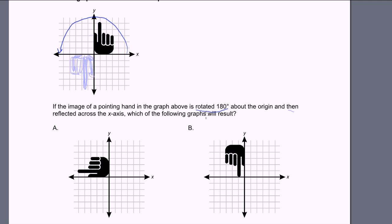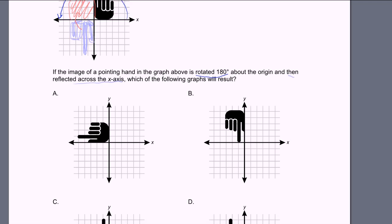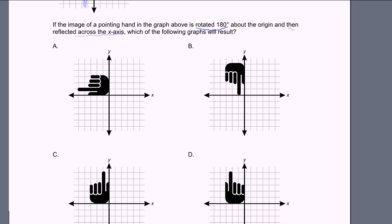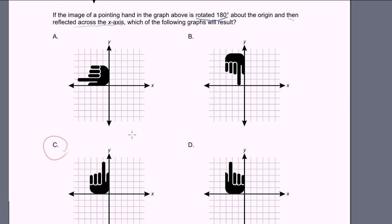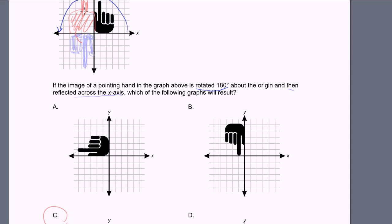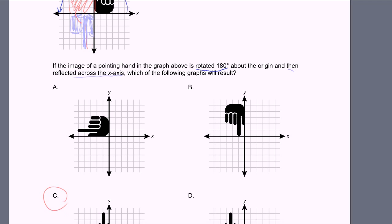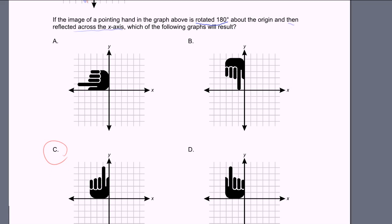The second part is then reflected across the x-axis. So if we reflect this across the x-axis, it's going to look like this — right there. So that should be our answer. Which of the choices looks like that? Looks like choice C. Choice C looks exactly like what we drew — where the finger is closer to the vertical axis than the pinky — because we rotated around and then we flipped. That is choice C.